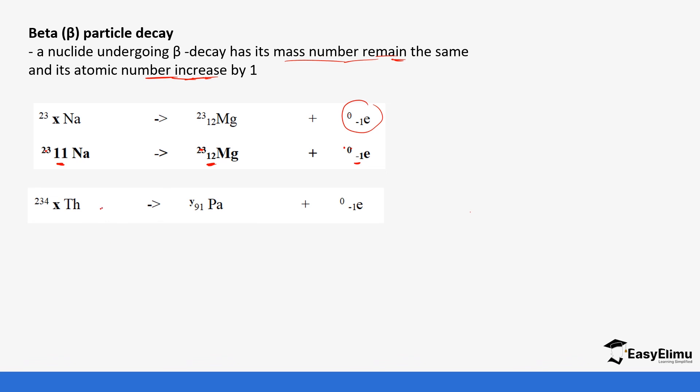Let's do this example. We have 234 equals y plus 0. So that tells you y equals 234. And then for x, x equals 91 minus negative 1. So x equals 90.